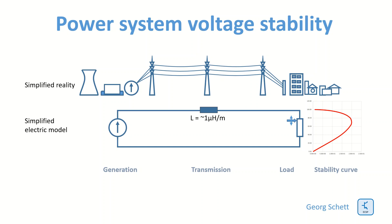A voltage collapse of the system means that at the end of the day the speed of the power generator is no longer controllable and it accelerates uncontrolled.